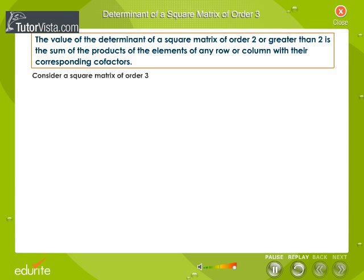Consider a square matrix of order 3. Let matrix A equal to: 1, minus 2, 4, minus 3, 6, 5, 2, minus 7, 9.